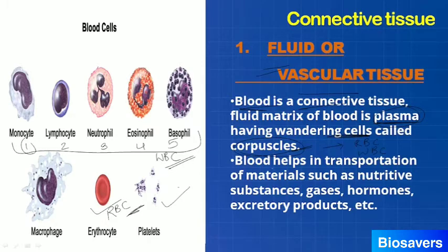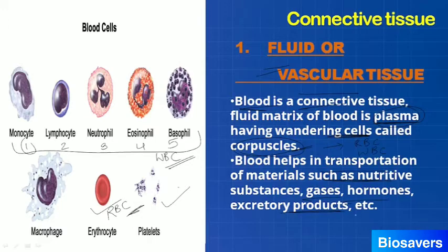So that was about the first type of connective tissue — blood. The main functions of blood are transportation of various materials such as nutritive substances, gases, and excretory products, and it also helps in protecting the body.